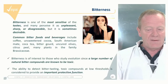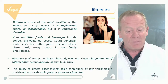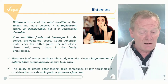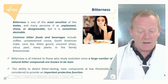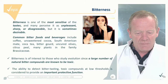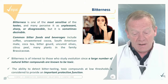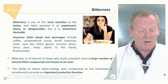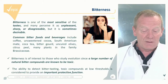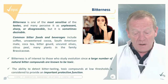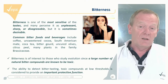Bitterness is the most sensitive taste because it is generally perceived as unpleasant or disagreeable. Common bitter foods and beverages include coffee, cocoa, and so on. This sensitivity is of evolutionary interest because a large number of natural bitter compounds are known to be toxic, so the ability to detect bitter-tasting toxic compounds at very low thresholds is considered to provide an important protective function in evolution.